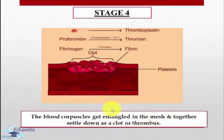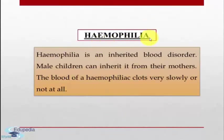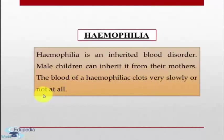So these were the four stages of blood clotting. Clotting within an intact blood vessel, usually a vein, is called thrombosis; the clot may dissolve spontaneously. Hemophilia is an inherited blood disorder; male children can inherit it from their mothers. The blood of a hemophilic clots very slowly or not at all, because either the hemophilic has too few platelets or the platelets cannot produce the chemical which causes fibrinogen to change into fibrin.